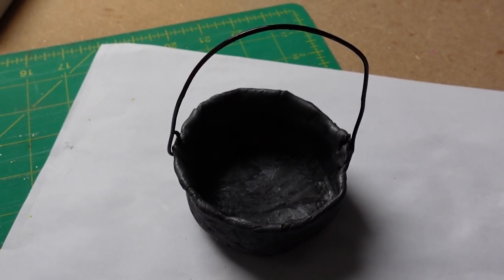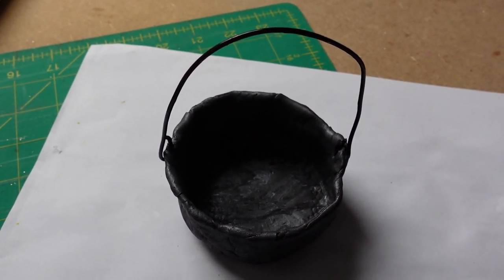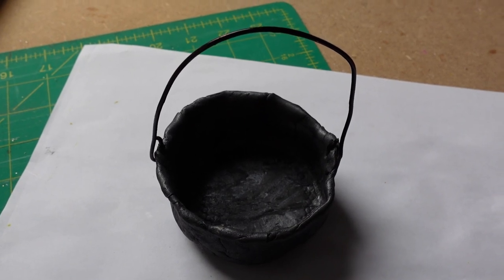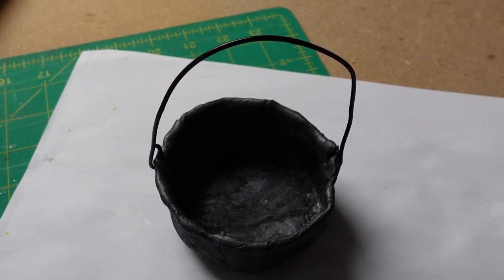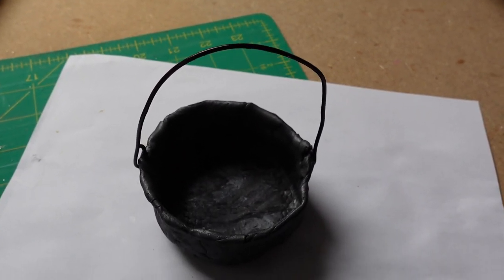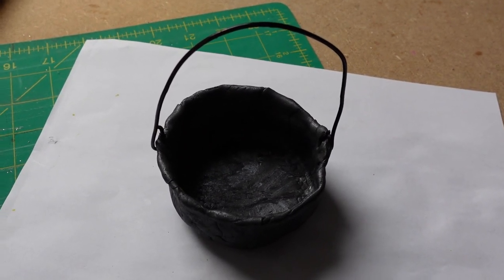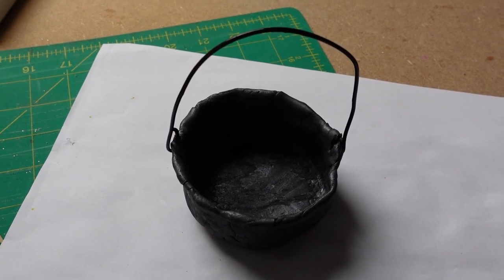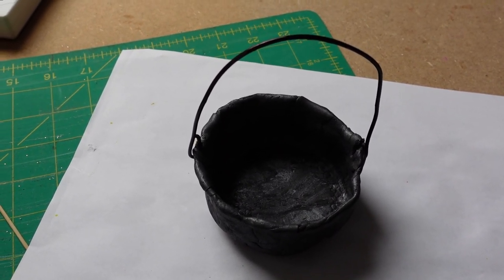So this is our finished cauldron. I've just painted the handle black. The other thing I thought I might do later is just to put some tape around the bits which meet here and here. It's worked out really well and I think we'll be able to put our dolls' sweets in there for when they're doing their trick-or-treat. Hope you like it.